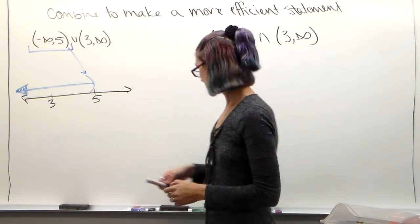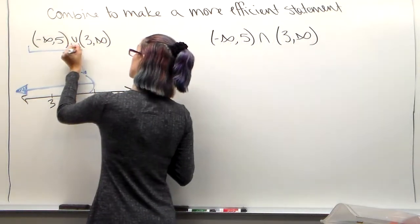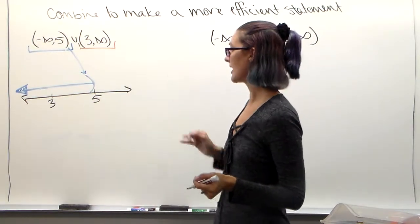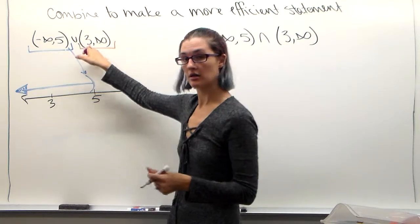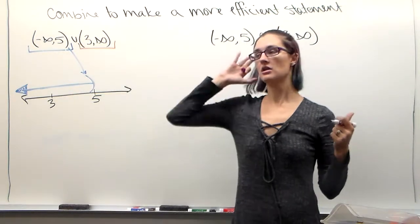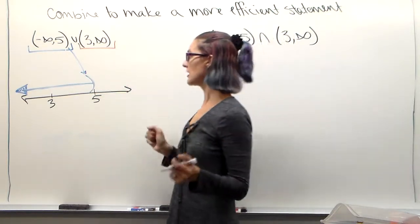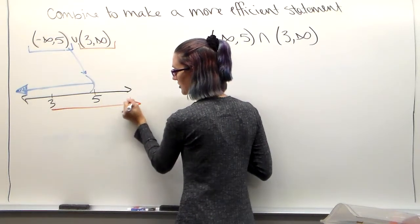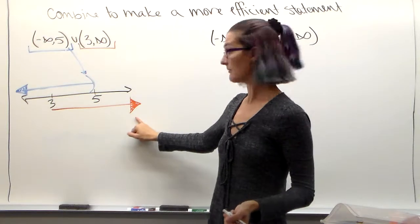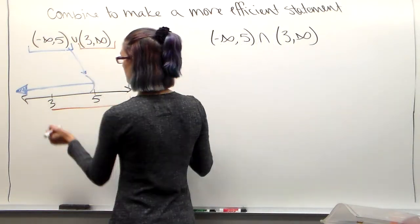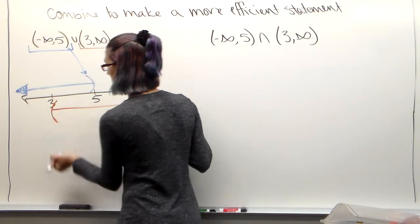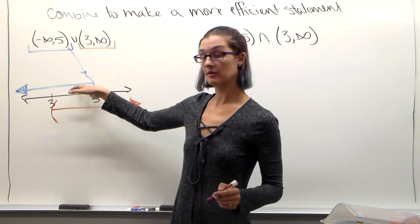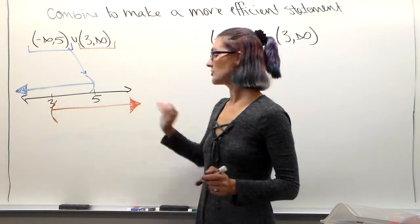That's the first set. The second set is 3 to infinity, and I'm going to graph that right below so I can compare the two sets. This is all the numbers from 3 all the way to positive infinity, going on forever and ever. So from 3 we go — and to show infinity we put arrows, because it keeps going and won't stop. The symbol on 3 is parentheses, so we put parentheses on 3. In blue we have negative infinity all the way to 5, and in brown we have 3 all the way to infinity.